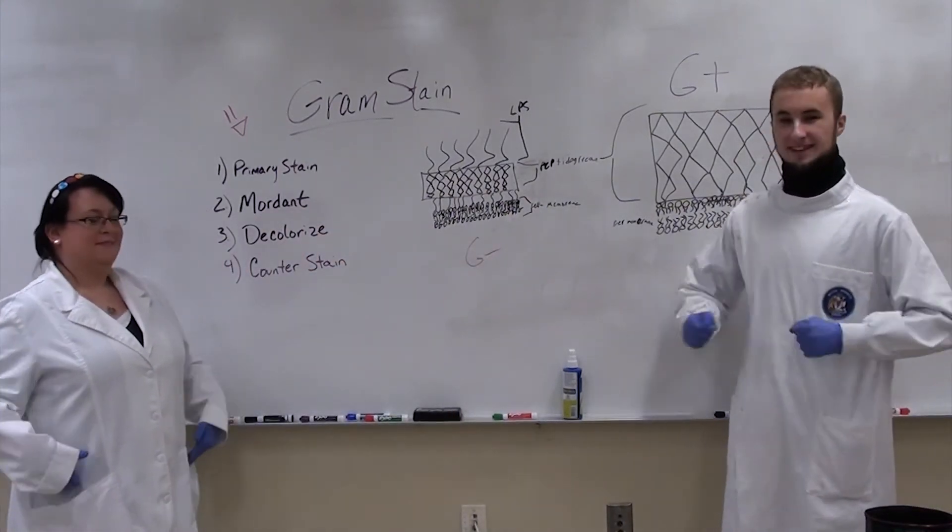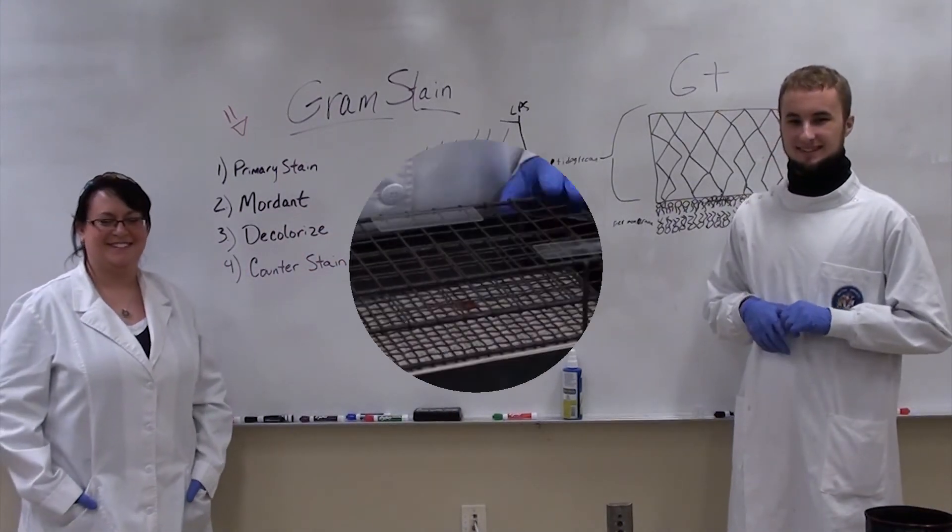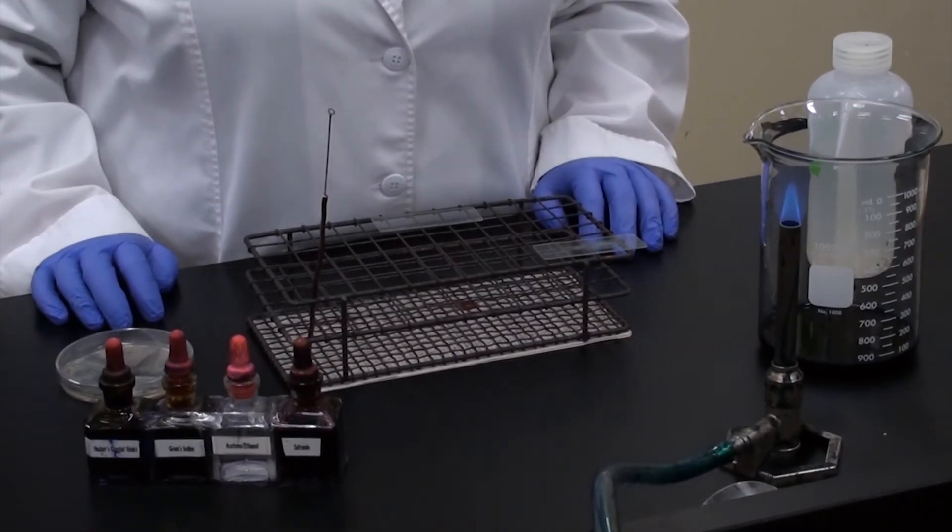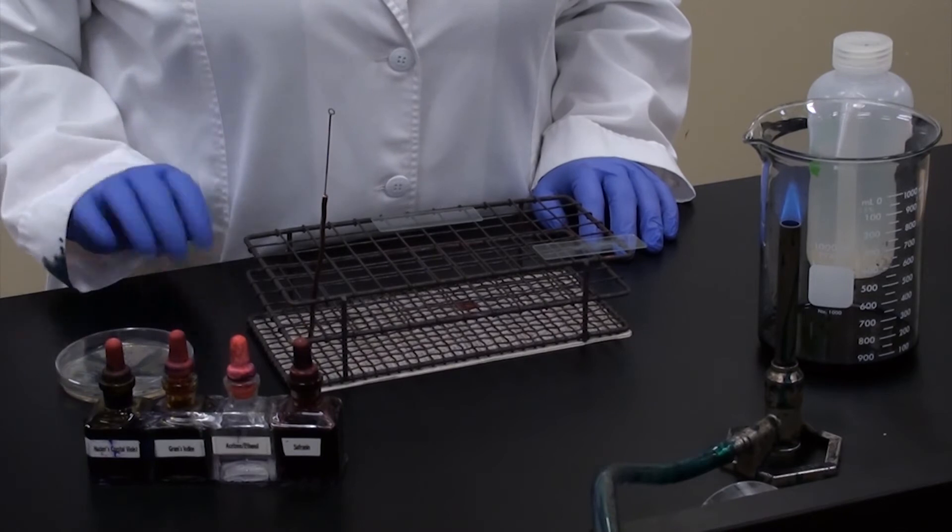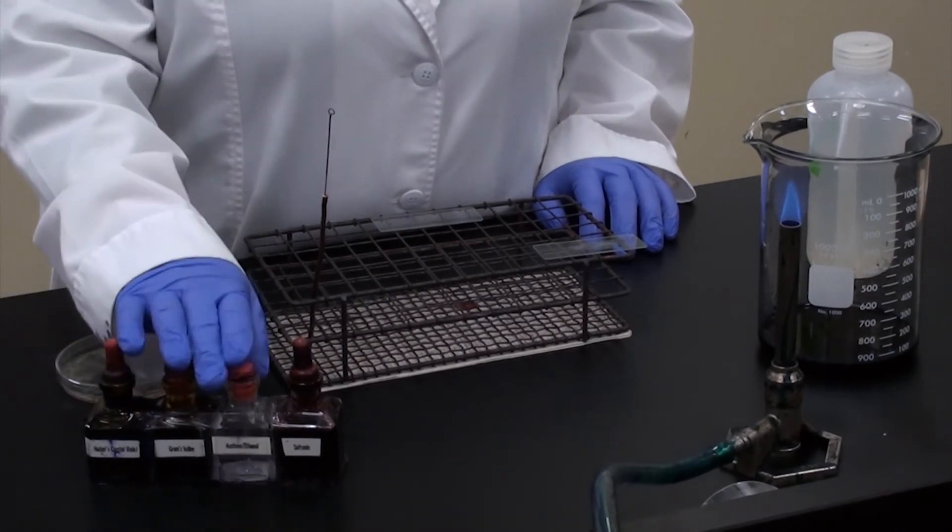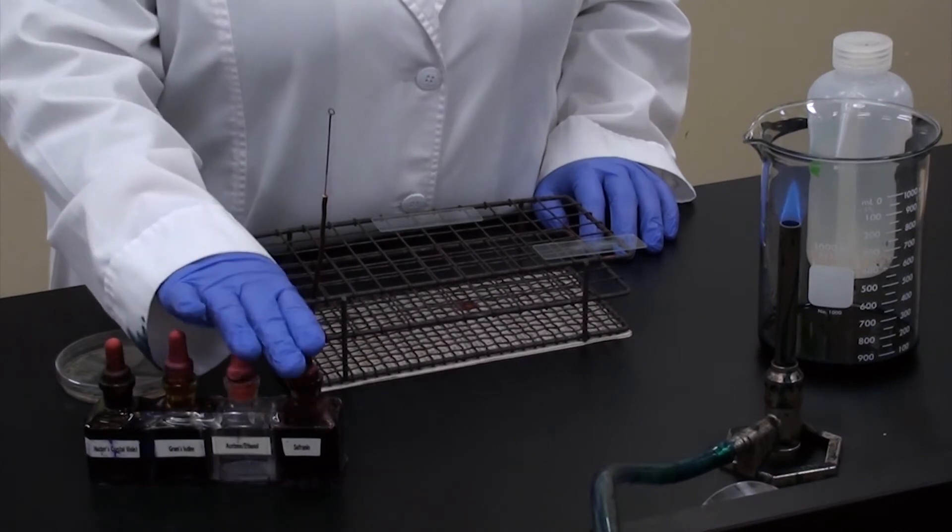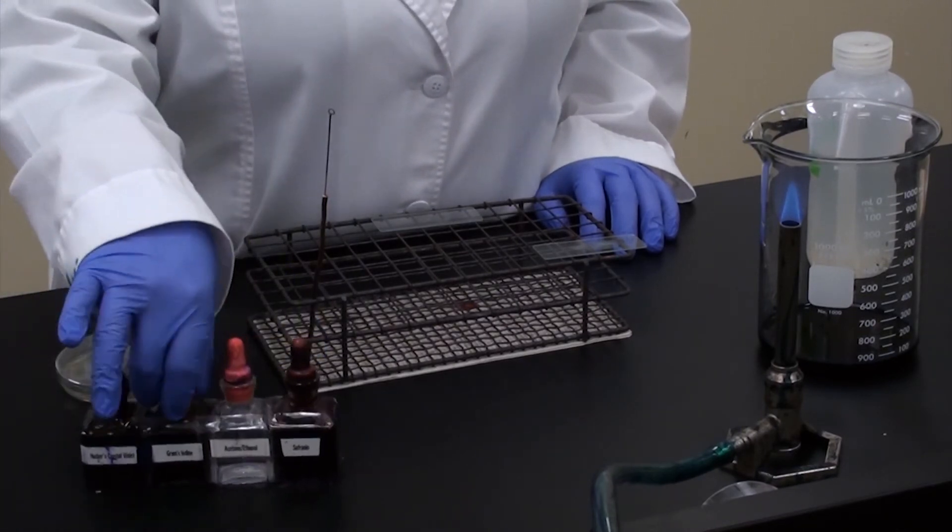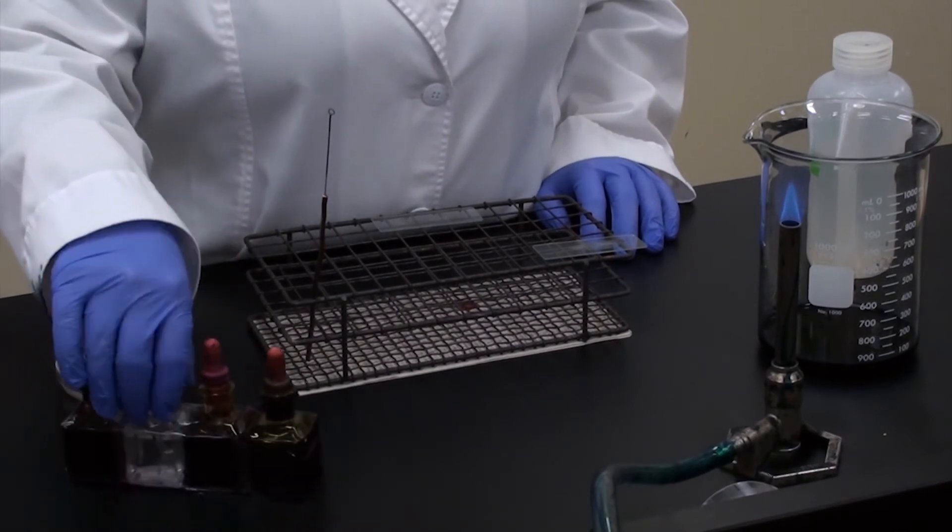So with that, we can get started. Okay, so we're going to demonstrate now how to do the gram stain. And as I said before, the gram stain consists of a four-step process: crystal violet, grams iodine mordant, acetone and ethanol decolorizer, and a counter stain of saffronin, which we conveniently taped together in a package for you so you don't get mixed up.